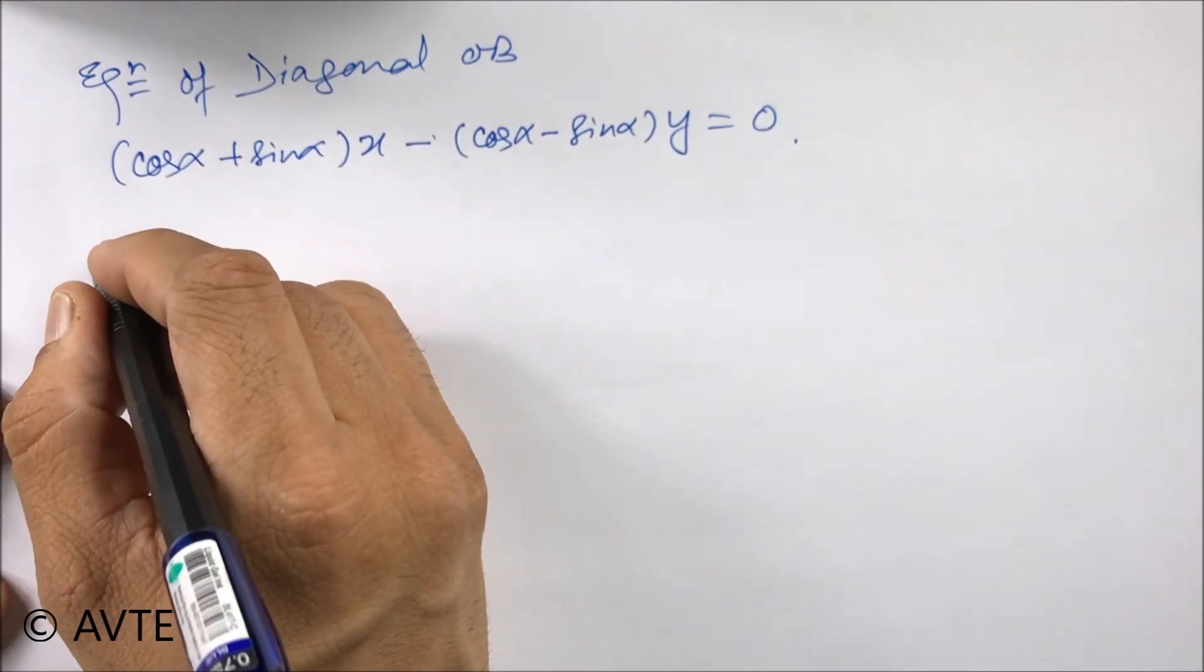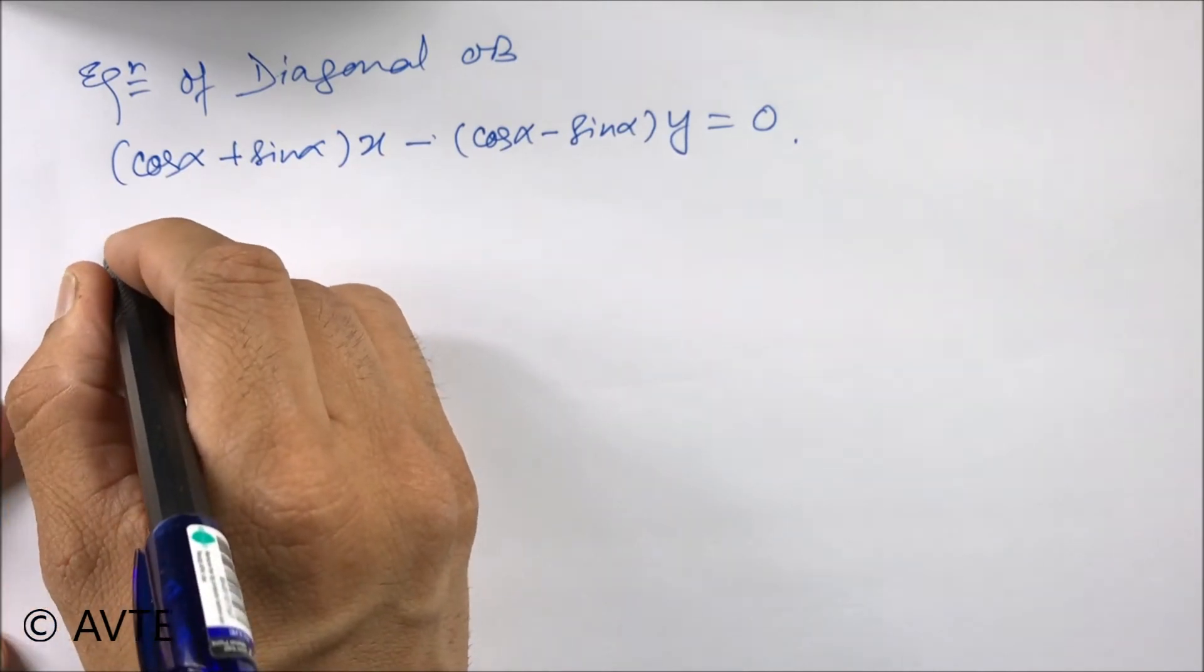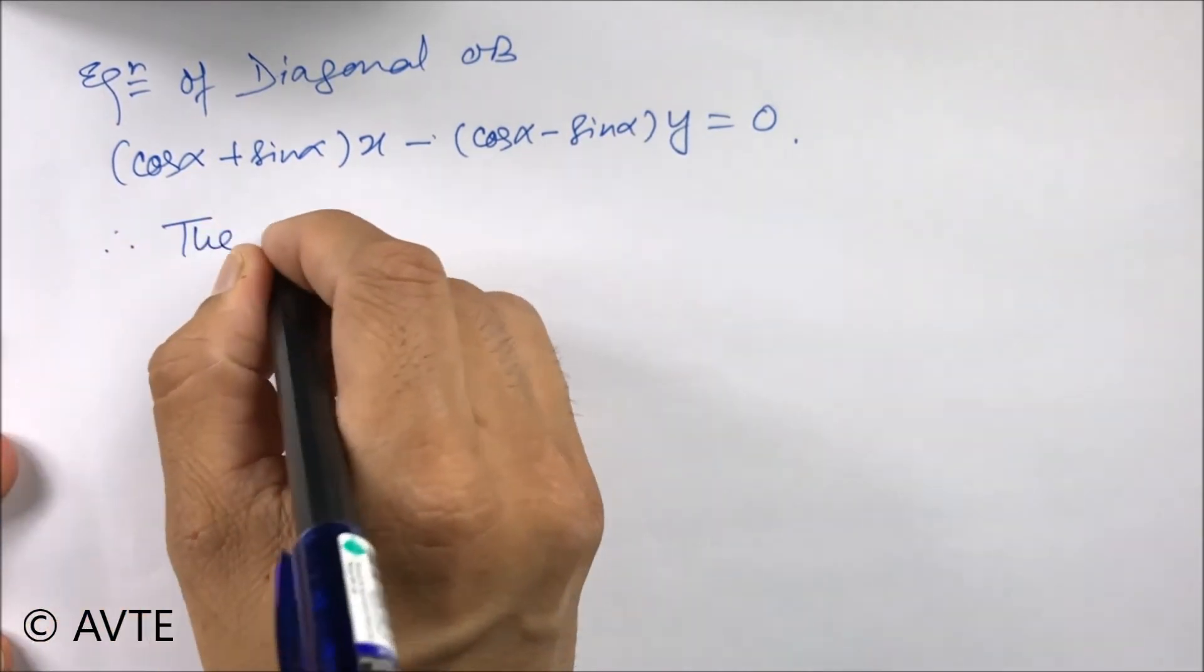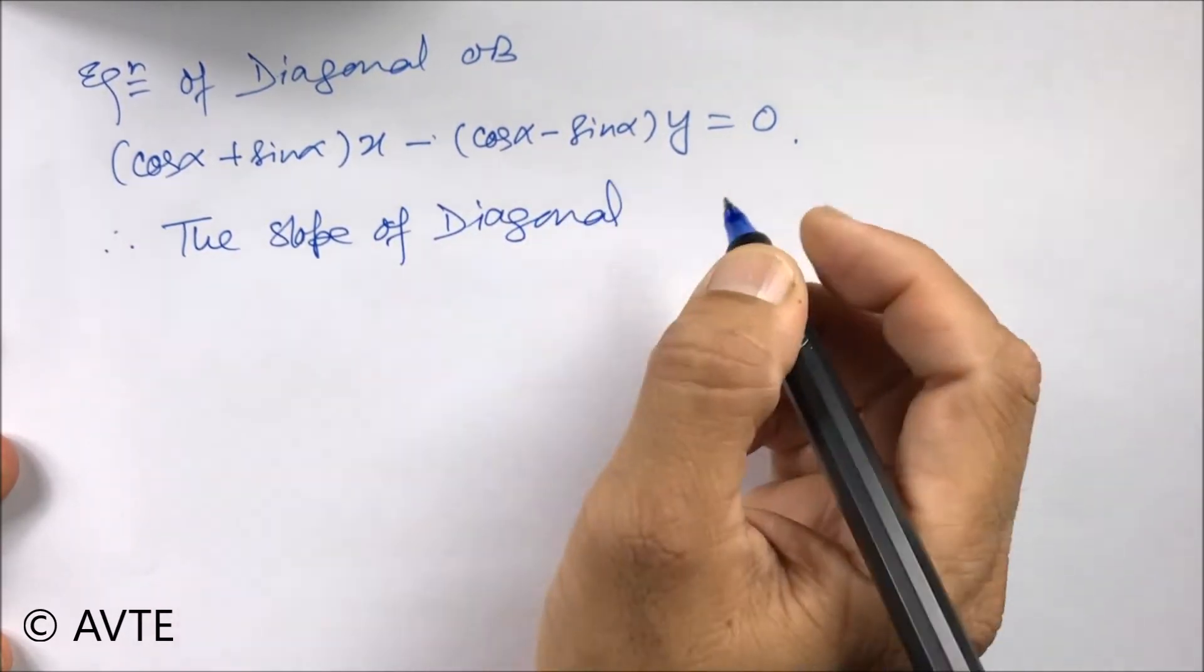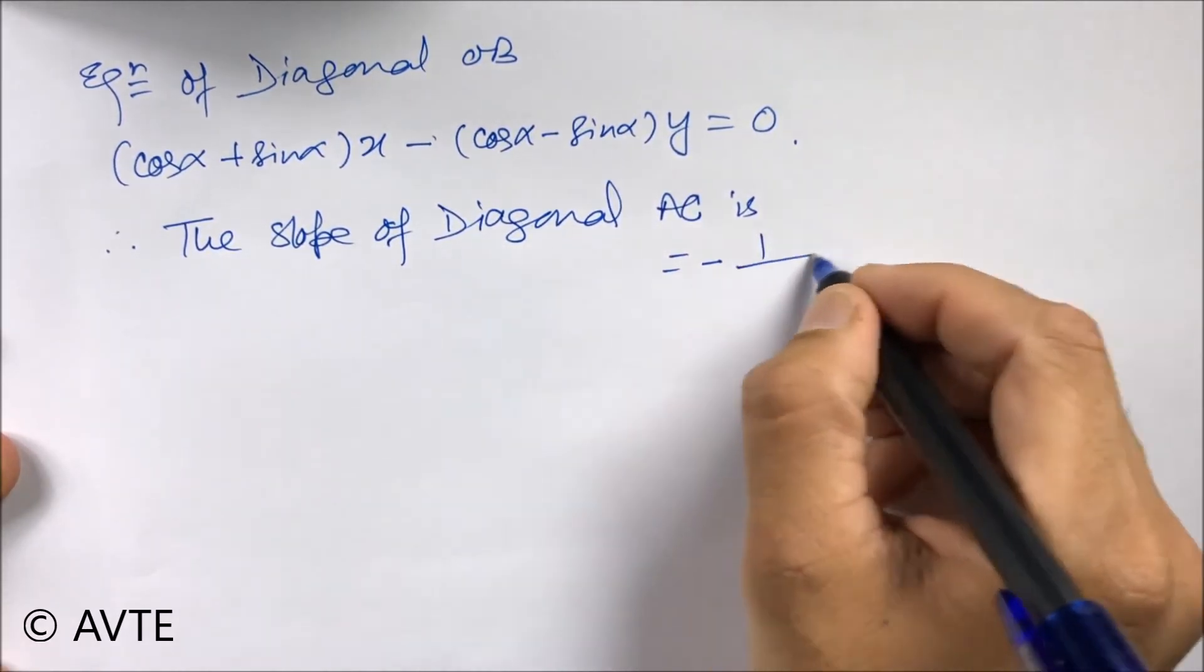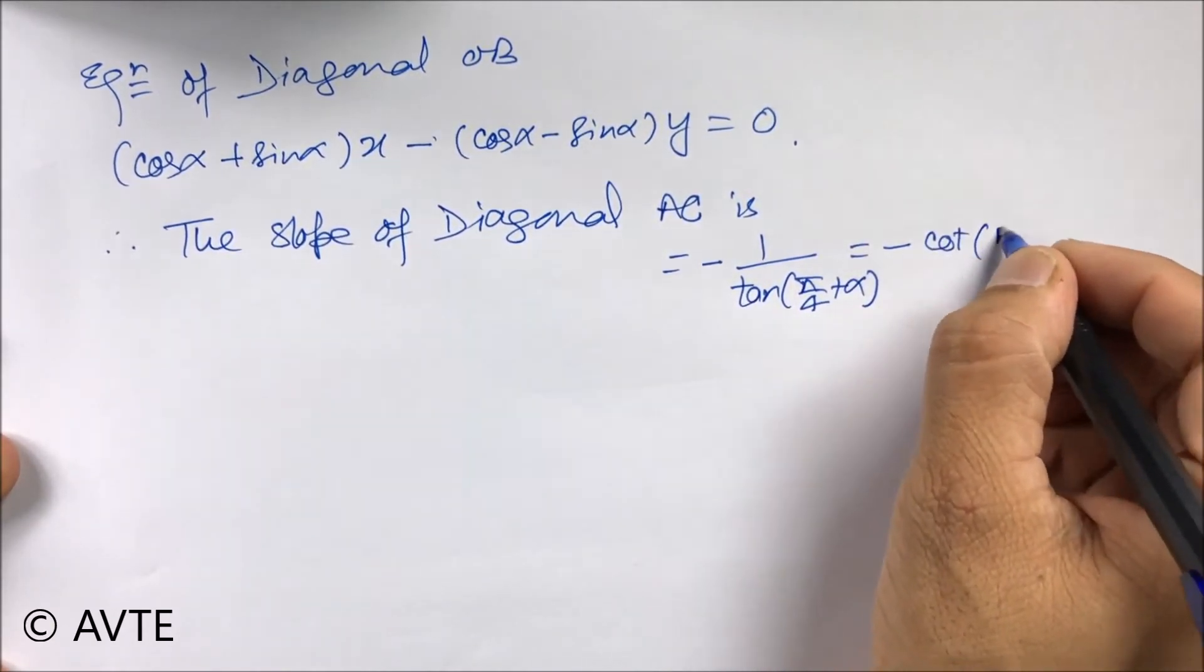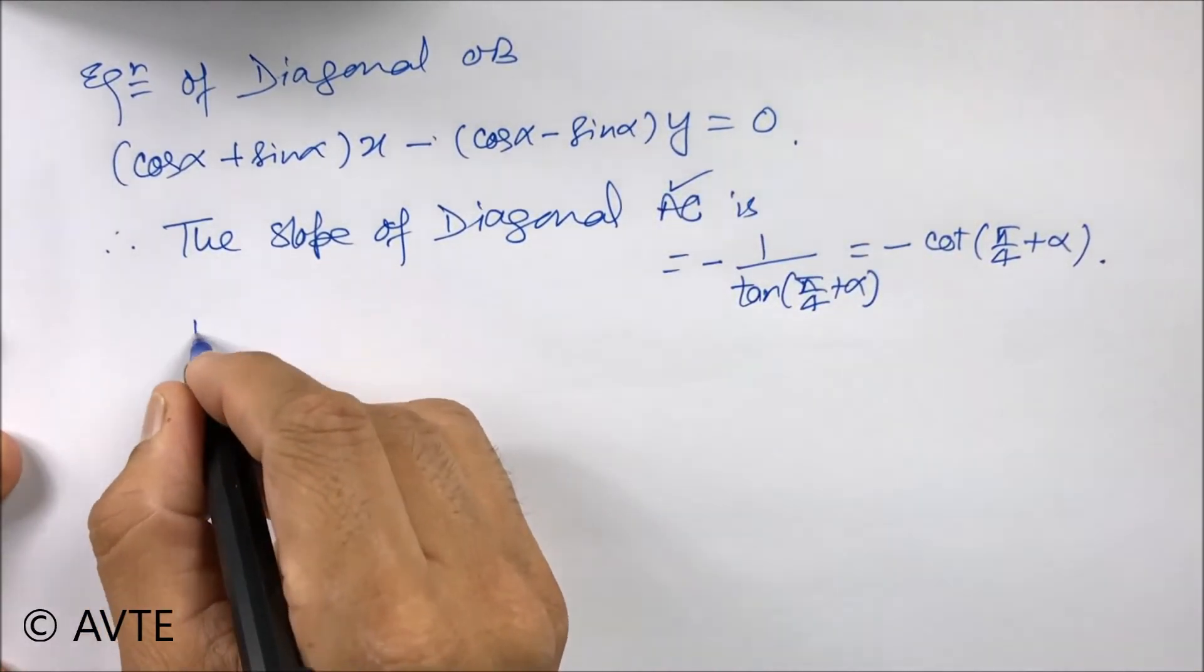Now coming on to another diagonal. If the slope of diagonal OB is tan pi by 4 plus alpha, therefore the slope of diagonal AC is minus 1 upon tan pi by 4 plus alpha, which is minus cot pi by 4 plus alpha.